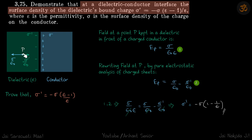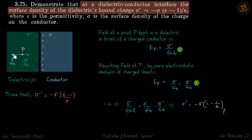So how are we going to do this? We'll take a point inside the dielectric and write the electric field on it in two ways. One: by pure electrostatics, considering the charge density on both the conductor and the dielectric. Second: by forgetting the charge density on the dielectric, considering only the conductor, and using the standard epsilon formula for a point inside the dielectric.